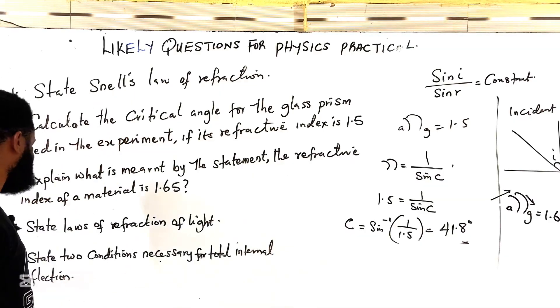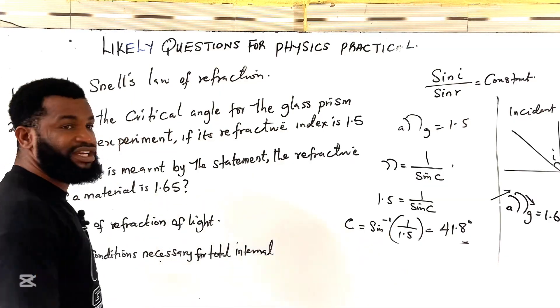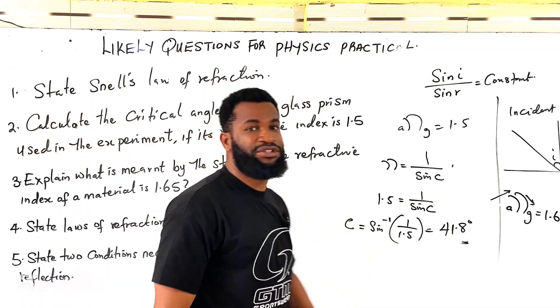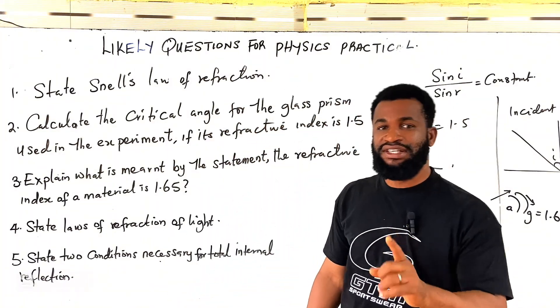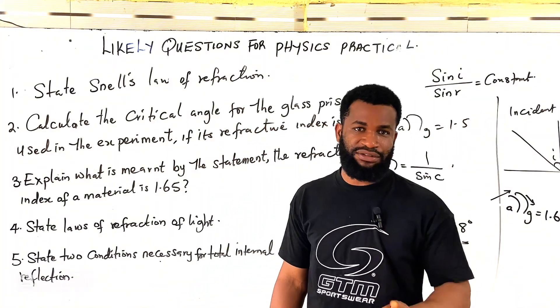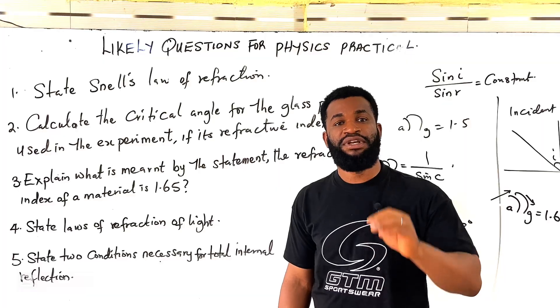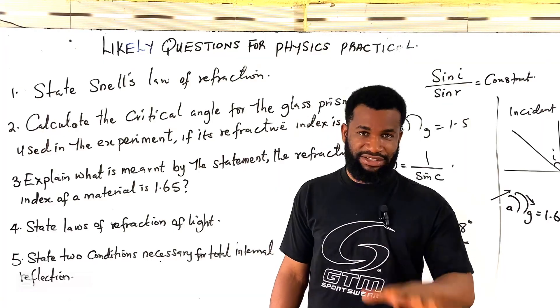Another one, number 5, I say state two conditions necessary for total internal reflection. Total internal reflection occurs when the incident angle is greater than critical angle. Number 2, when light is passing from more dense medium to a less dense medium.